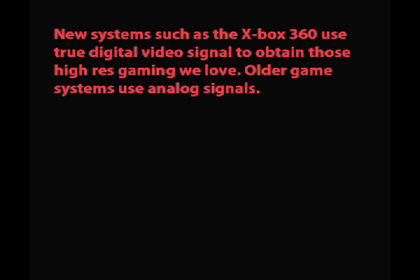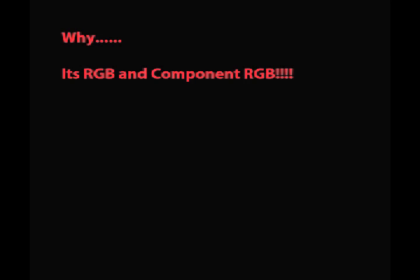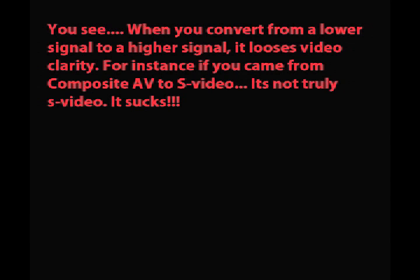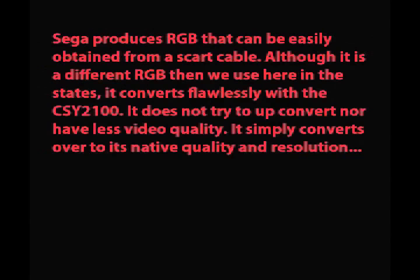Older game systems use analog signals. The best connection for analog video game signals is RGB and component RGB. When you convert from a lower signal to a higher signal, it loses video clarity. For instance, if you come from composite AV to S-Video, it's not truly S-Video — it just degrades. Sega produces RGB that can easily be obtained from a SCART cable.